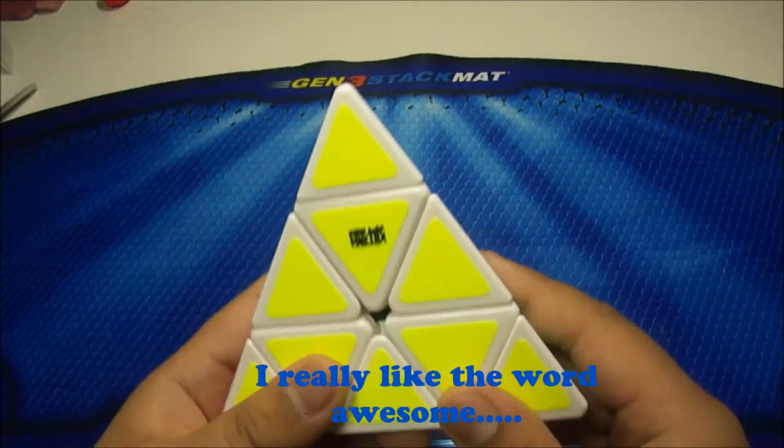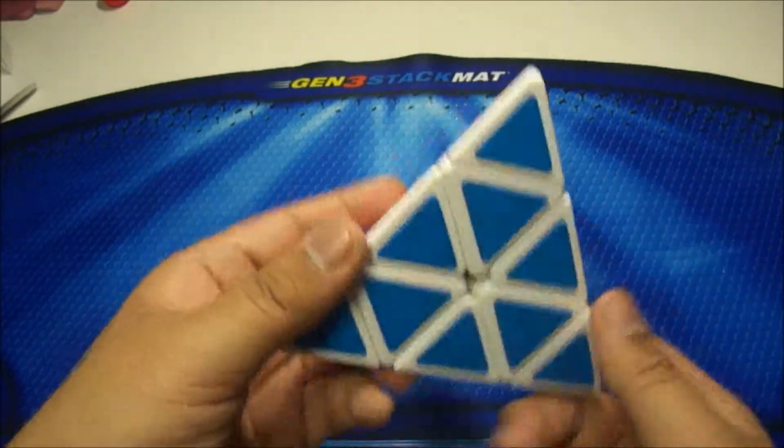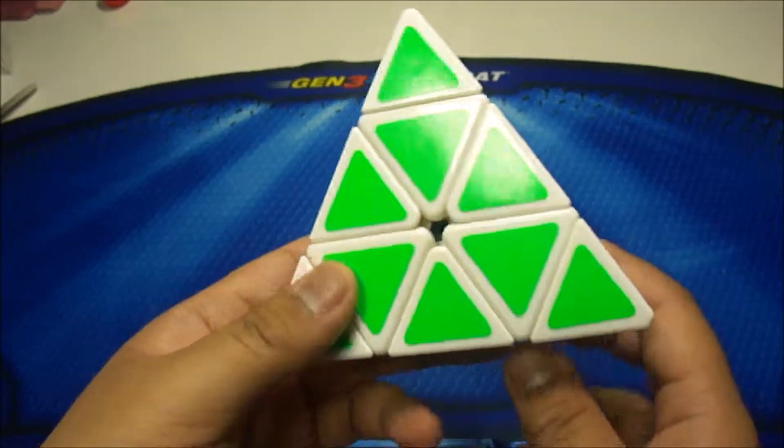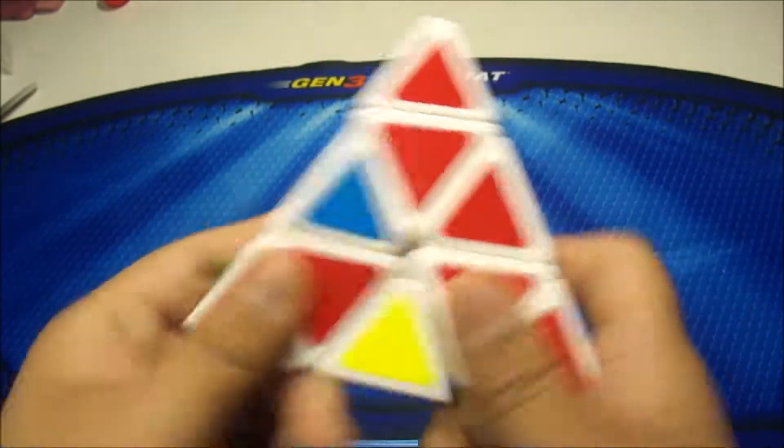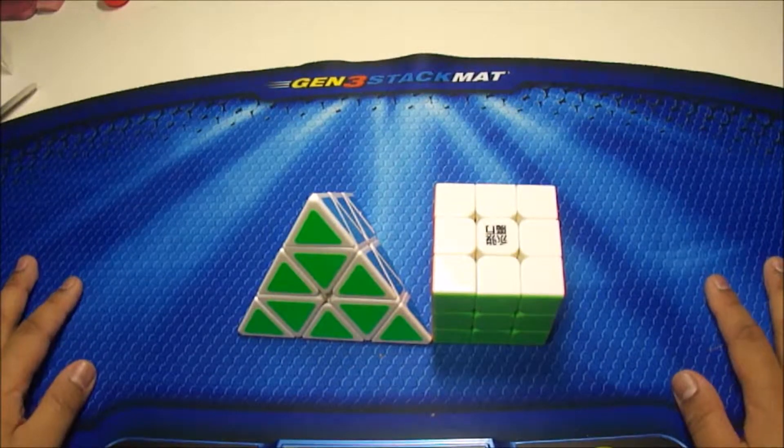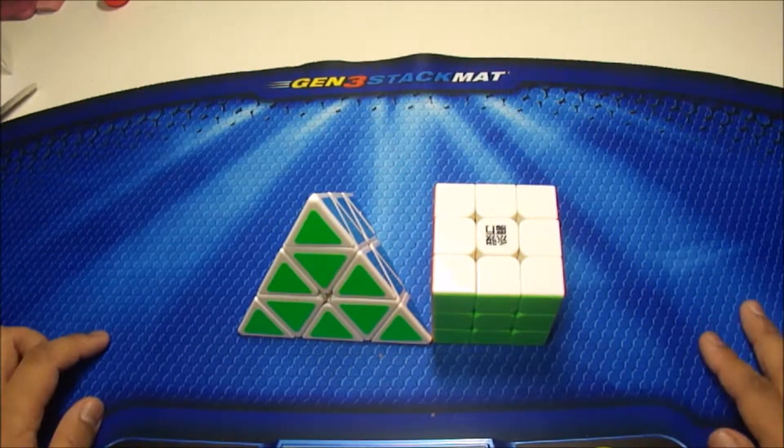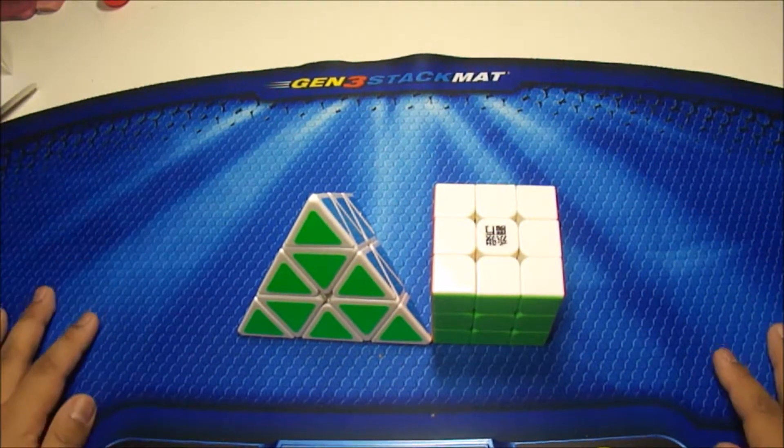But yeah, this thing is really awesome. And of course I love the Moe you shades. Other people hate them, I have no idea why. But this doesn't have orange, so I don't think that will be a problem. So I hope you enjoyed my unboxing of the Moe you paraminx and the YJ Yulong. Thanks for watching. Peace.